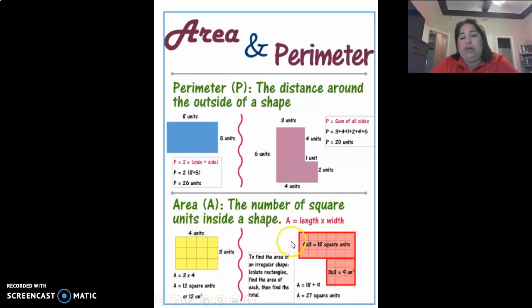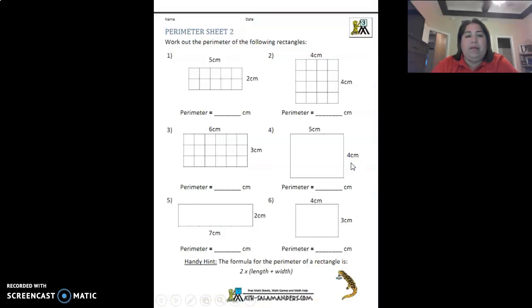Now if you have more sides like this one you're going to multiply these two first, the six and the three, and then this one is three by three. So then you'll have 9 times 18, 9 plus 18, and your square units is 27. So here we go.